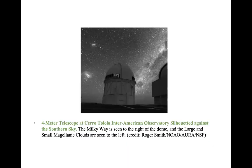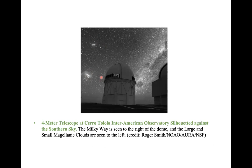When you look at those two galaxies from Earth, you can see them on the left-hand side of the sky. One is right here and the other one is here — these are the two satellite galaxies we call the Large Magellanic Cloud and the Small Magellanic Cloud.